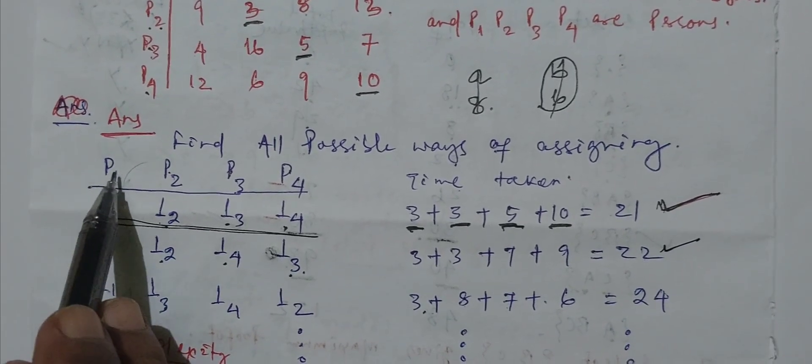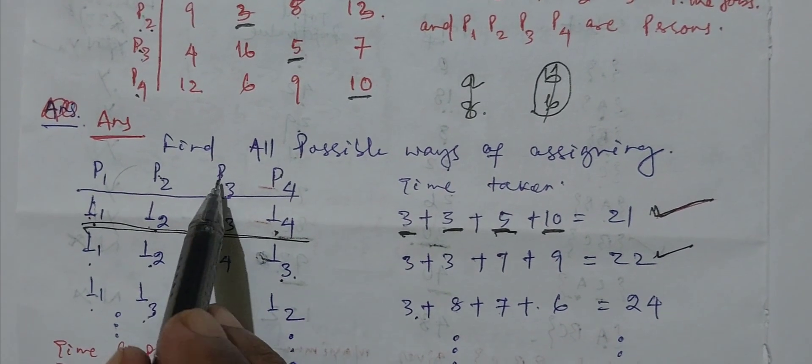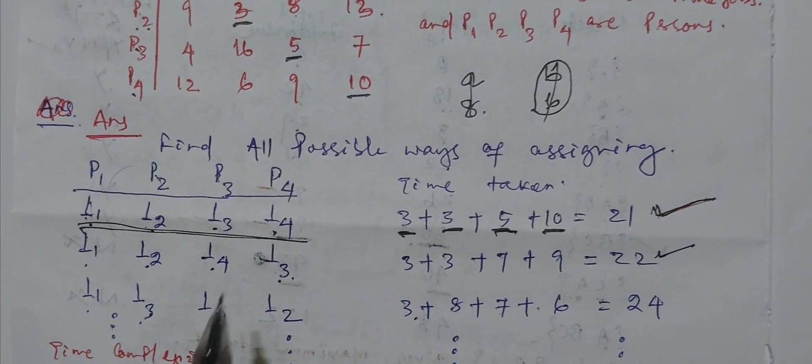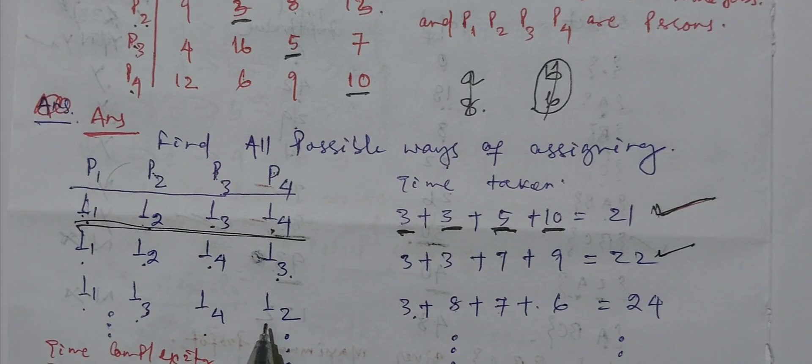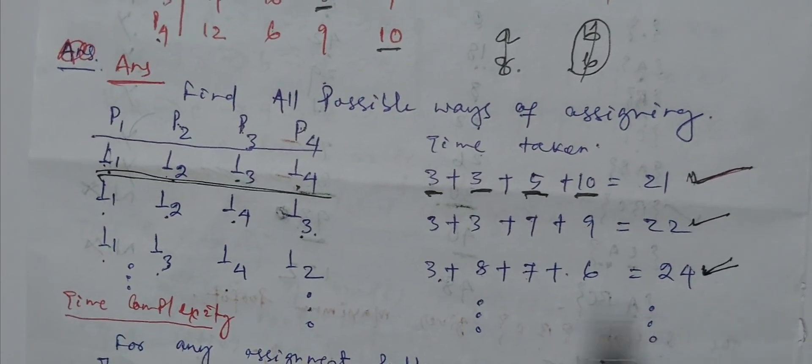Similarly, when person 1 is assigned with job 1, person 2 is assigned with job 3, person 3 is assigned with job 4, person 4 is assigned with job 2, the result will be 24 days.